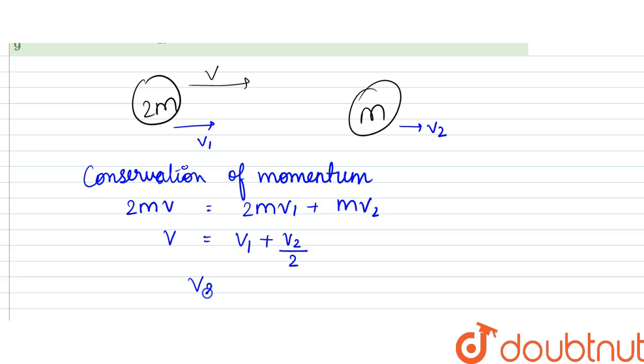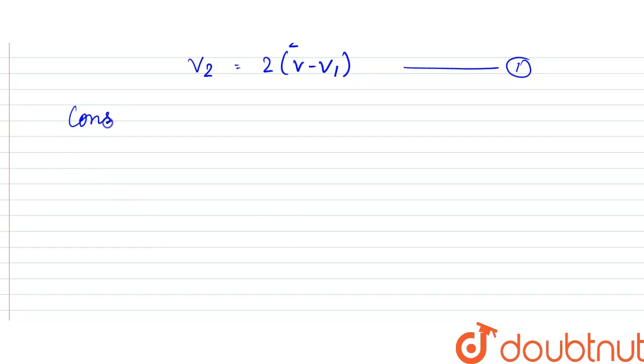write v₂ to be equal to 2v minus v₁. Let this be the first equation. Now, using conservation of energy: